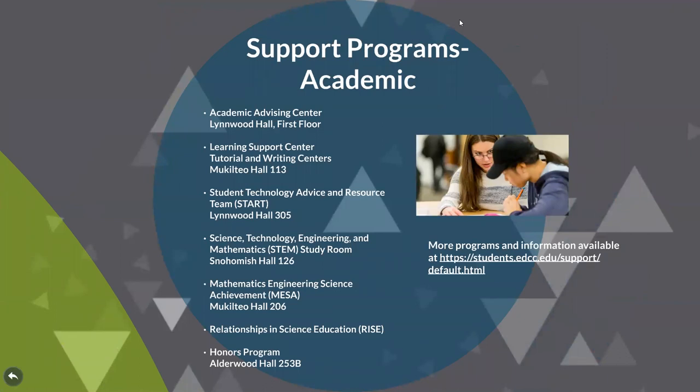Here at Edmonds, we want to see you succeed inside and outside of the classroom. We offer a number of support programs to assist you academically. Academic advising can help you plan your pathway, choose classes, and transition to university. The Learning Support Center houses our Tutoring and Writing Centers. The START office can assist students with technology questions relating to Edmail, Canvas, and Google Apps. The STEM Study Room, along with MESA and RISE programs, are focused on students pursuing a STEM or healthcare field or taking courses in those fields. We also have an Honors Program on campus for students who desire to further their intellectual and academic pursuits. It is important to note that some of these programs also have special admittance criteria. You can read more about the programs in our Student Resource Guide, available online.